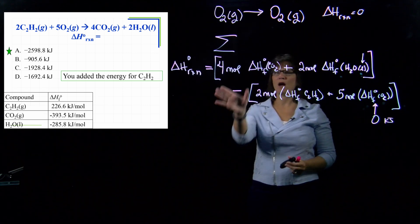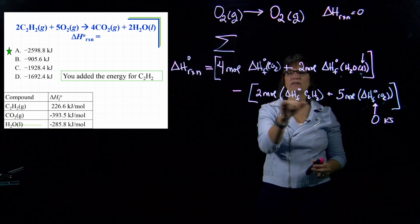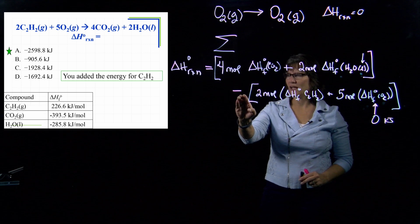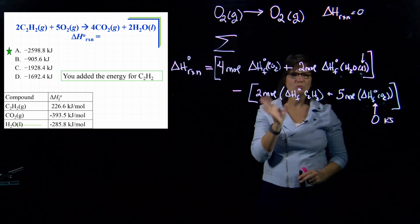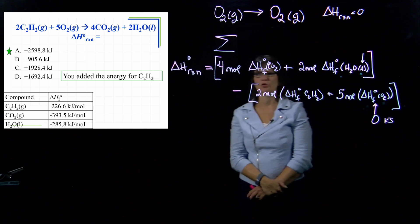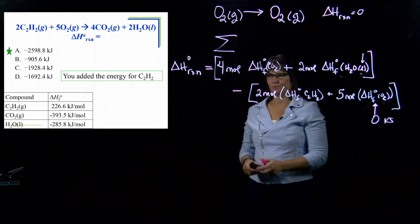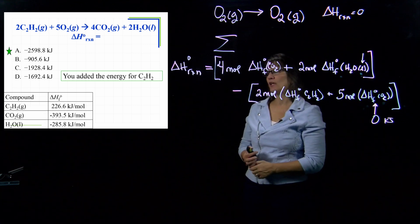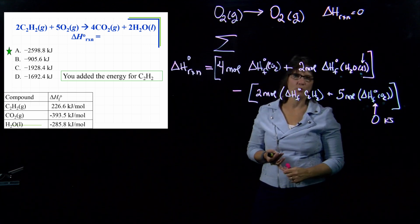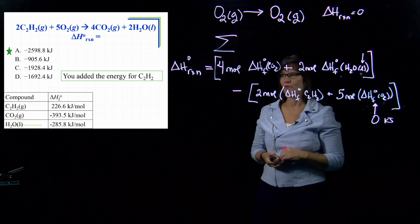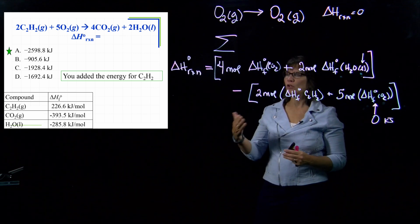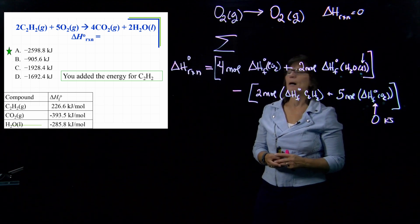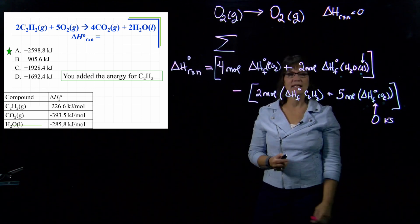So that would be a common mistake is to forget to double things, forget to put these in, forget about the sign here that this is minus. You just be meticulous of plugging your stuff in, and you'll be okay. Go back and see if you can redo it and see if you can get that negative 2598.8 kilojoules for your answer. And if you have any problems with this, let me know. We'll see other variations of this in class and work on this some more when we practice in class.